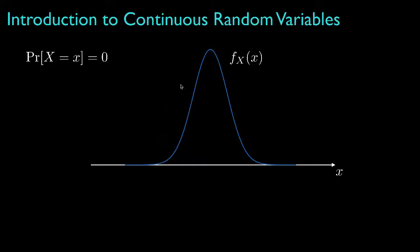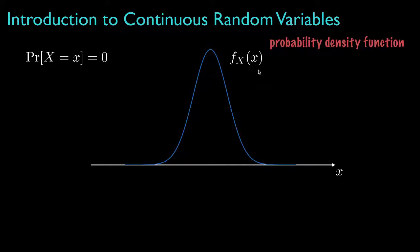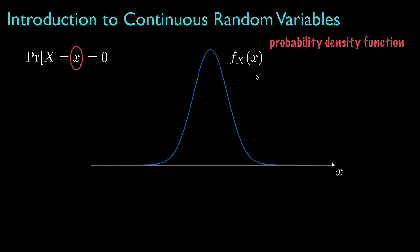A continuous random variable is characterized by a probability distribution, and we'll represent that with a probability density function. We'll typically represent that with the function f with a subscript that represents the name or symbol for the random variable. As we did with discrete random variables, we'll typically use uppercase symbols to denote the random variable, and we'll use lowercase symbols to denote the particular values that the random variable takes.